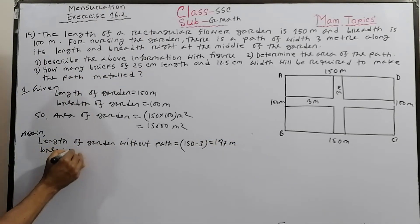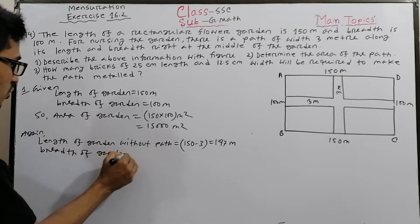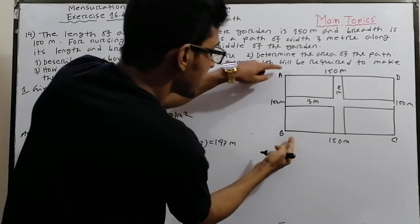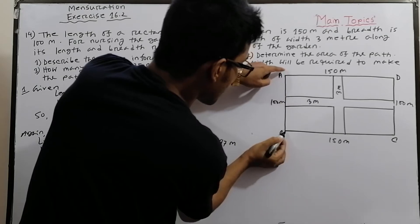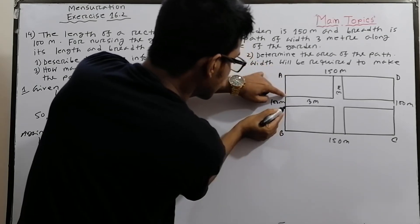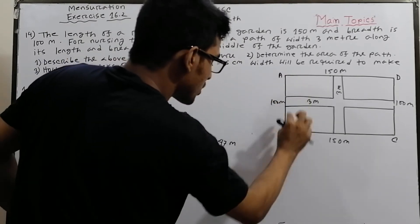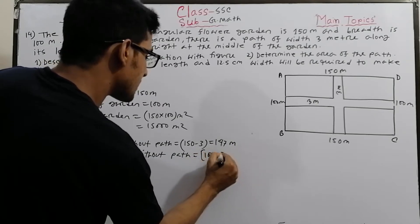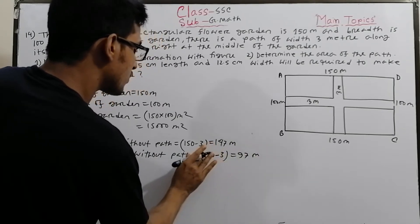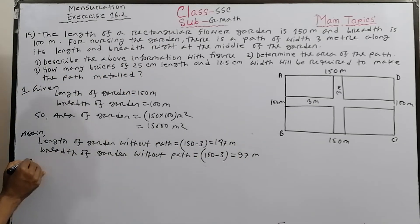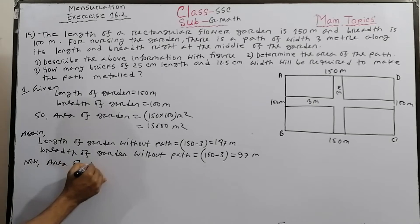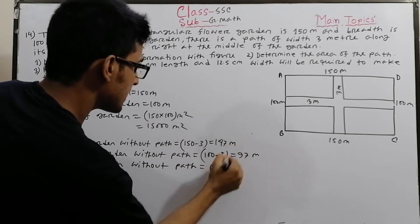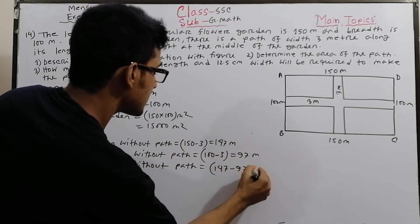Breadth of garden without path: the breadth is 100 meters minus 3 equals 97 meters. So area of garden without path equals 147 into 97 equals 14,259 square meters.